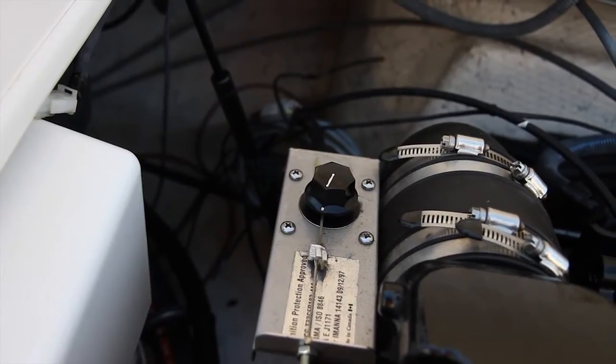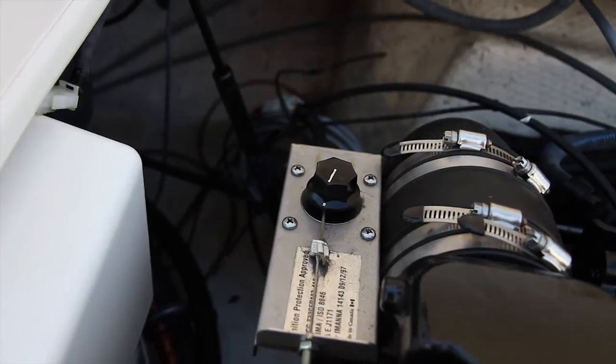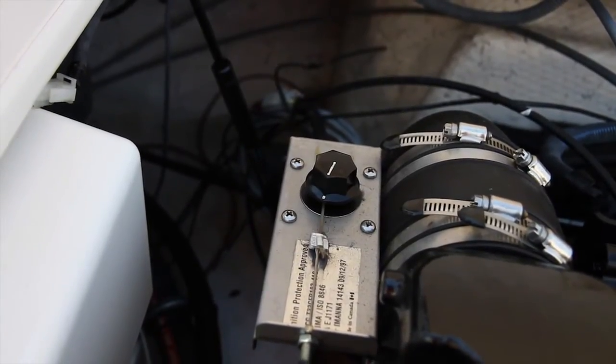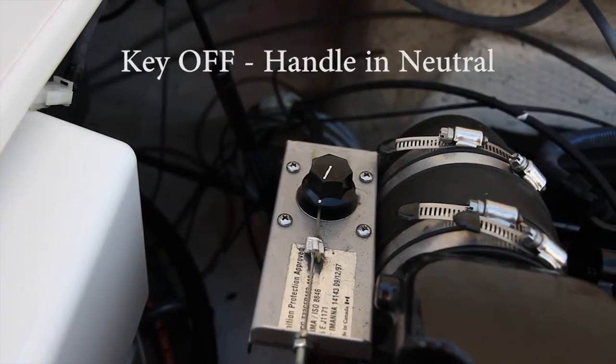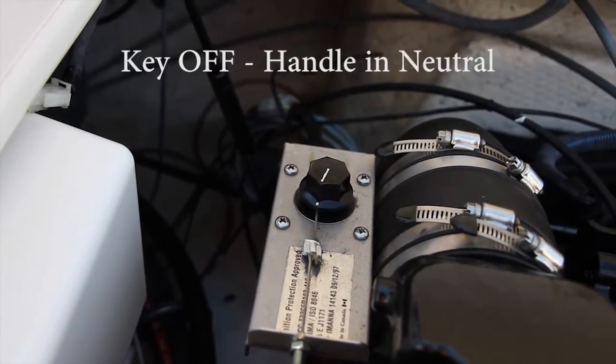The servomotor auto tighten test is a great way to determine whether your servomotor has proper voltage and is operating according to spec. This is done with the key off and the throttle handle in the neutral position.